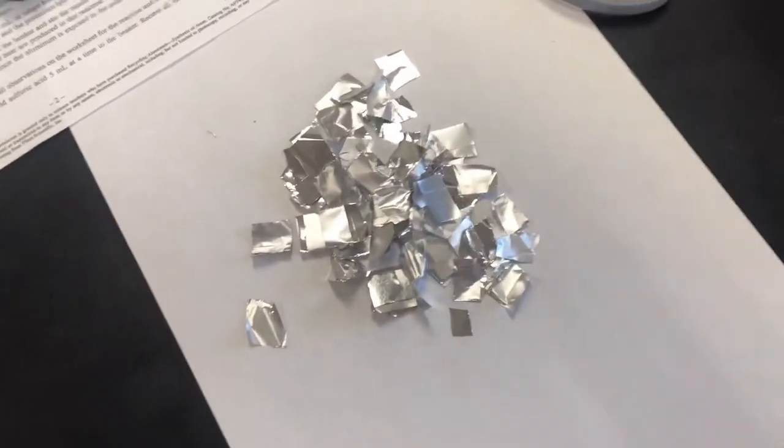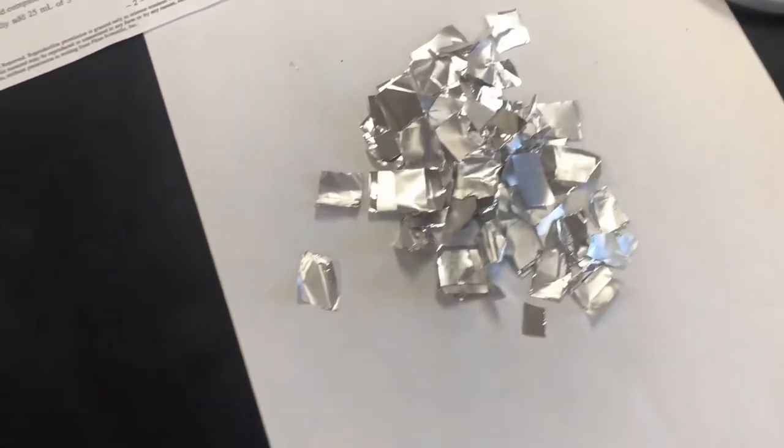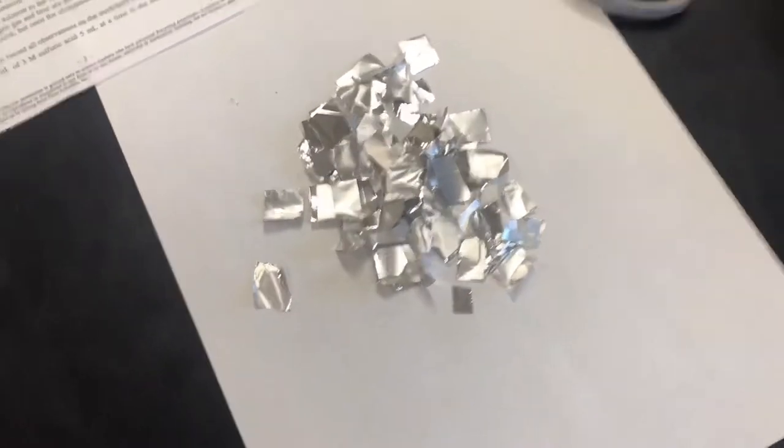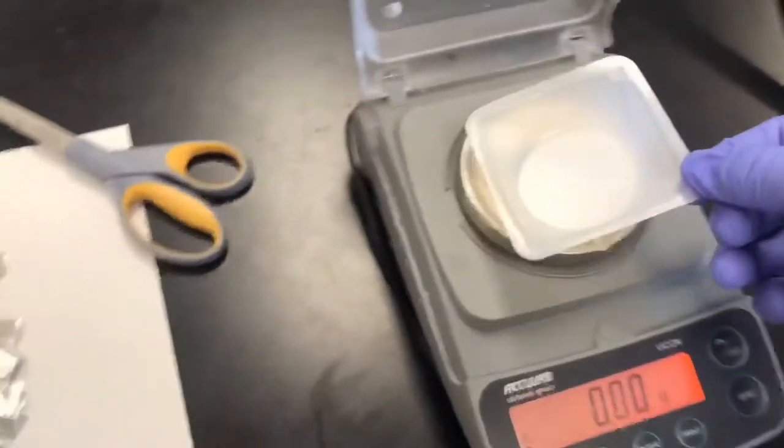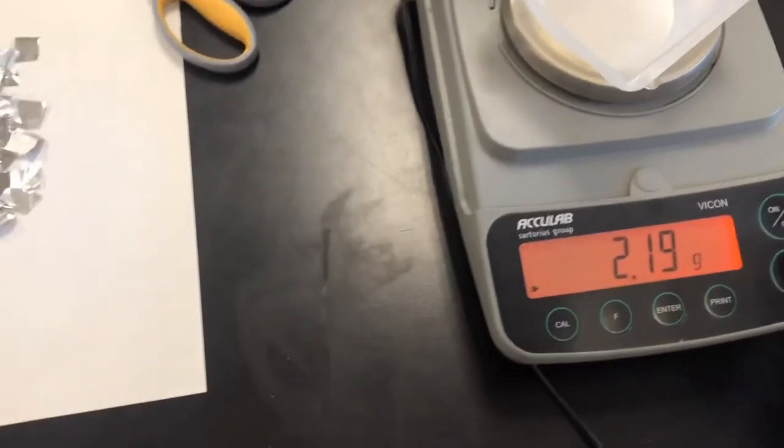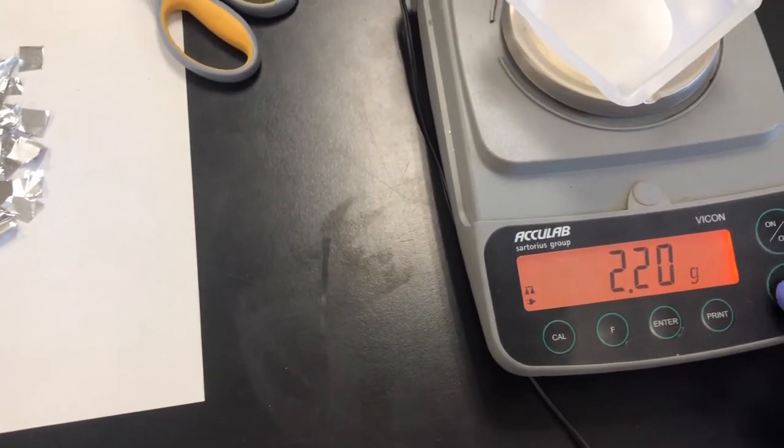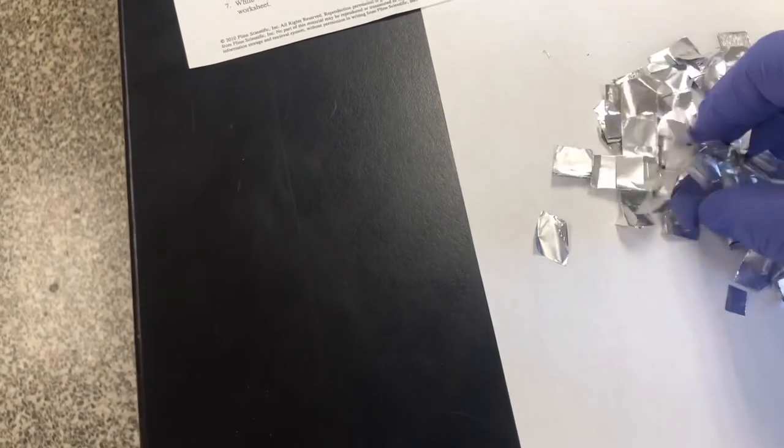We have some aluminum already. This has been cut up. We need to tear our weighing dish. We're going to hit zero and we need to get as close to 0.75 grams as possible.